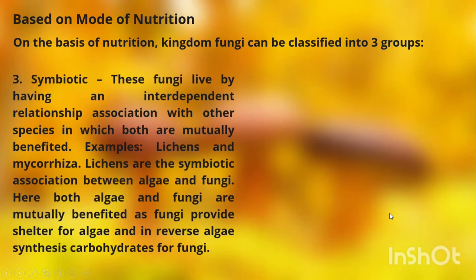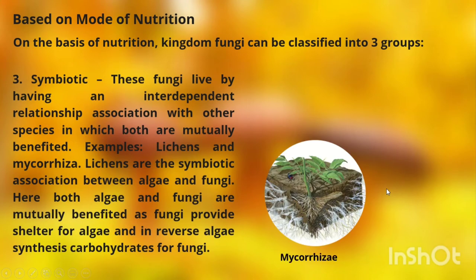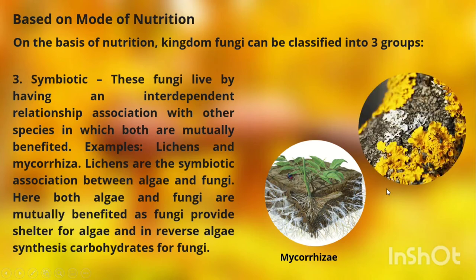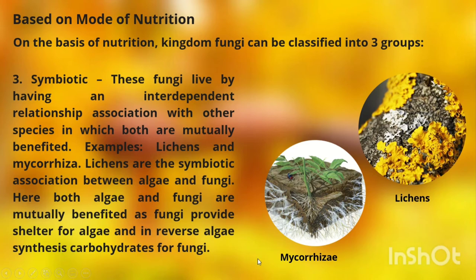The third type is symbiotic. These fungi live by having an interdependent relationship with other species in which both are mutually benefited. Examples are lichens and mycorrhiza. Lichens are the symbiotic association between algae and fungi, where fungi provide shelter for algae, and in return, algae synthesize carbohydrates for fungi.